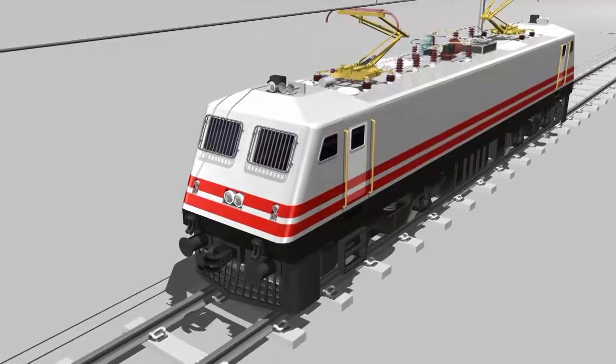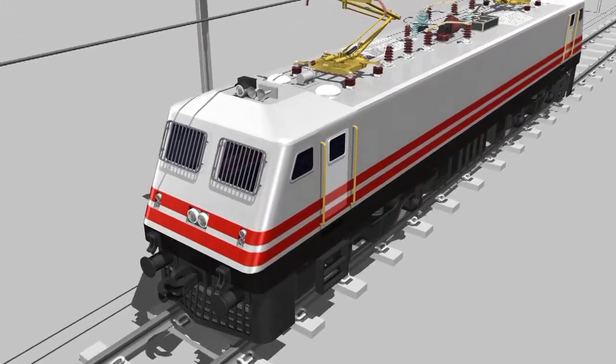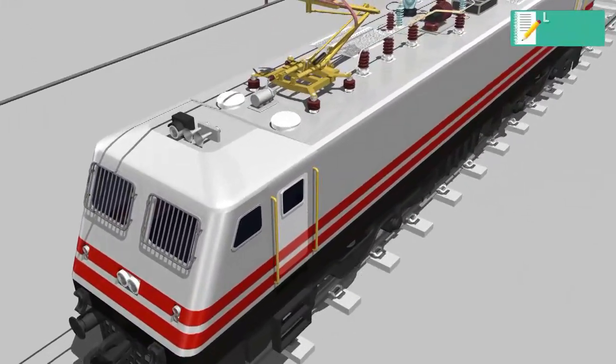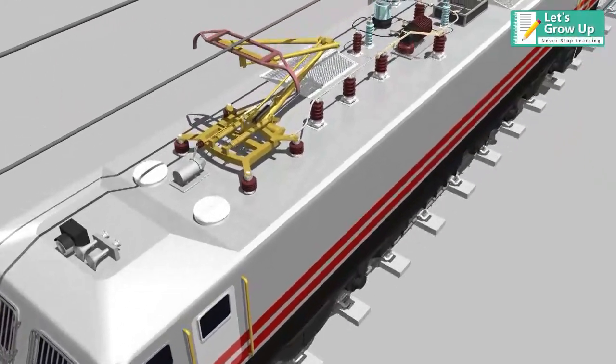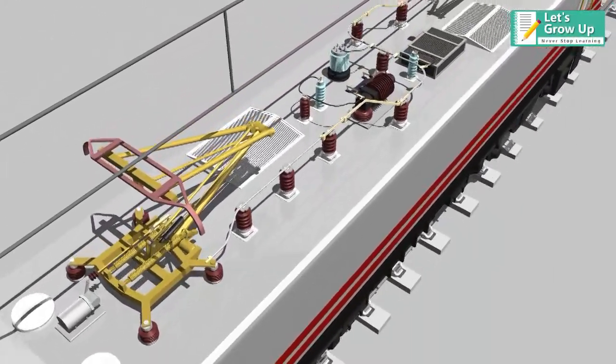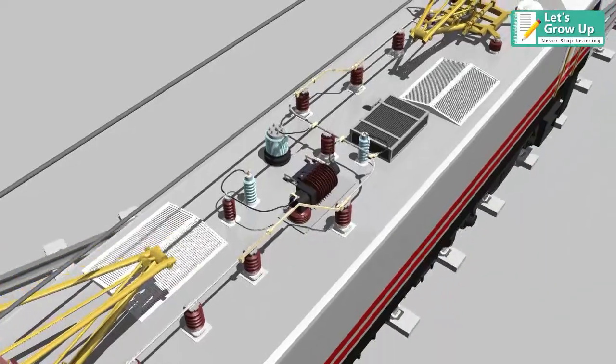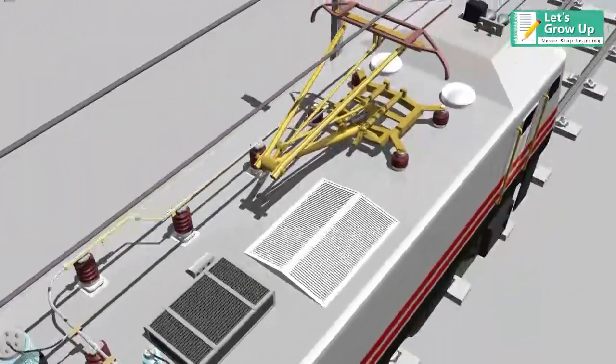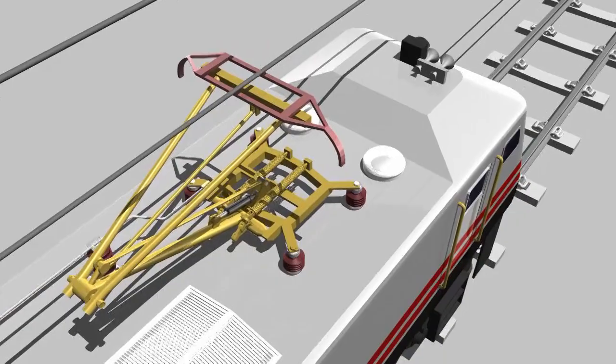Some devices are installed at the rooftop of the locomotive. These devices are used to protect the locomotive from short-circuit and overload currents. In this video, we will learn about the rooftop components of an electric locomotive.